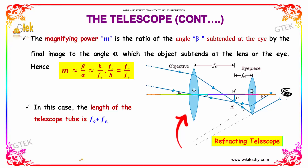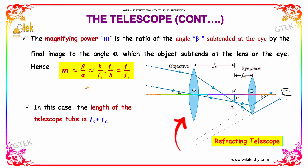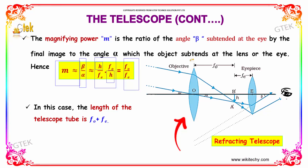The magnifying power M is the ratio of the angle beta subtended at the eye by the final image to the angle alpha subtended by the object at the lens or eye. Hence M = beta / alpha, which equals (H / FE) × (F0 / H). Canceling H gives M = F0 / FE, where F0 is the objective focal length and FE is the eyepiece focal length. The length of the telescope tube is F0 plus FE.